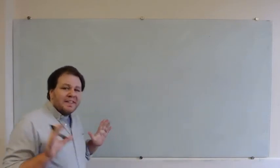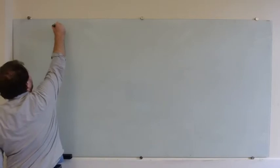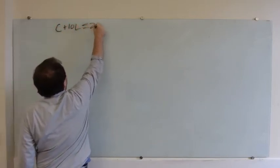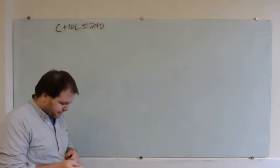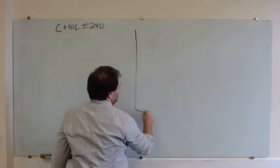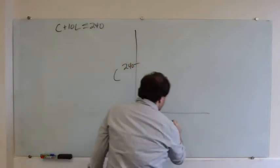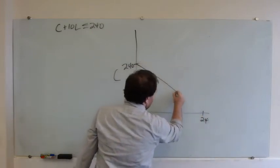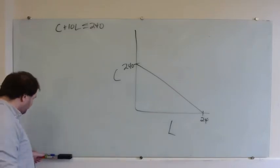Let's start out with the same budget constraint we looked at in the last video. Let's say C plus 10L is less than or equal to 240, which is just a version of C plus WL equals W times T. If we graph this, we could afford up to 240 units of consumption or 24 hours of leisure or anything in between.